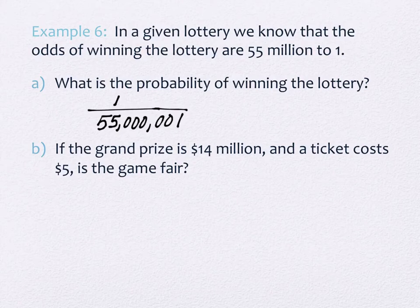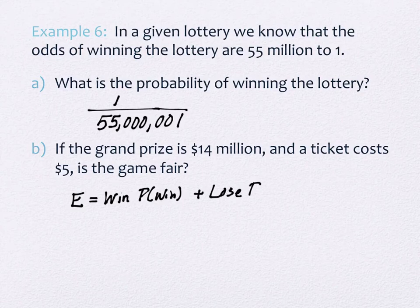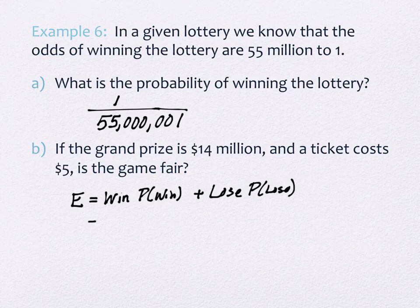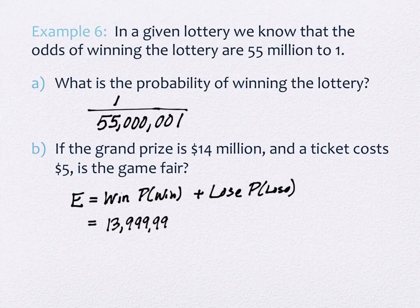If the grand prize is 14 million and tickets cost $5, is the game fair? So here's our expected value. We have the winning and the probability of winning and we have the losing and we have the probability of losing. So if you win what do you win? You win 14 million sort of. What do you really win? You win 13 million 999,995. Why? Because it cost you five bucks to play the game. Only if you bought one ticket. So we're assuming you just bought one ticket.